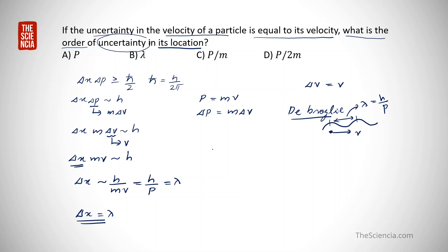There is also a tricky alternative way to solve this problem. Even if you don't remember the uncertainty relation, you can solve it using dimensional analysis — an A-plus-two level trick. The question asks for uncertainty in location, so the dimension of delta x is length.